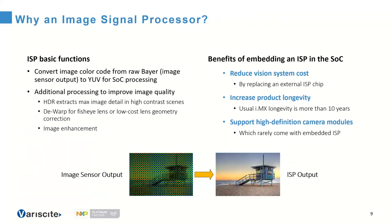The image signal processor can offload external MIPI-CSI camera sensors, providing system-level cost savings. On the i.MX 8M Plus, the ISPs convert image color codes and can extract detail from high-contrast scenes, de-warp fisheye lenses, correct geometry for low-cost lenses, and enhance the image before passing it to other processing units. Using the on-chip ISP replaces external ISP chips, which are often costly and have shorter product life than needed for industrial applications.